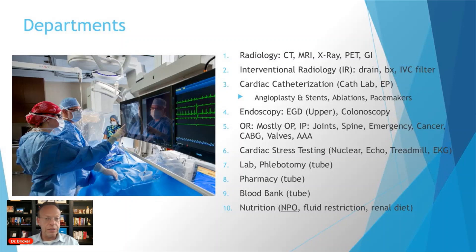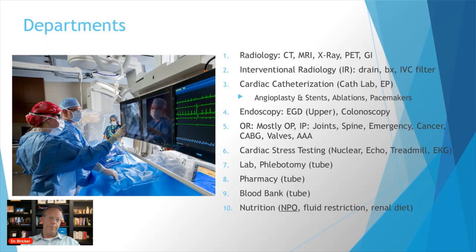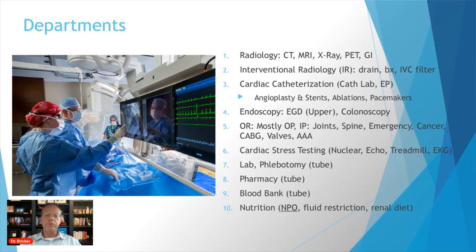Then there's interventional radiology, which actually looks a lot like this — this is a cardiac cath lab, but interventional radiology looks the same way. This right here is what's referred to as a C-arm, where you can take movies with an X-ray. This is where the interventional radiologist uses imaging to stick drains into abscesses to drain pus without surgery, or to take biopsies from, say, a piece of the lung, using imaging to guide the needle. They can also place what's referred to as an IVC filter — an inferior vena cava filter — which is a very common procedure at a hospital.